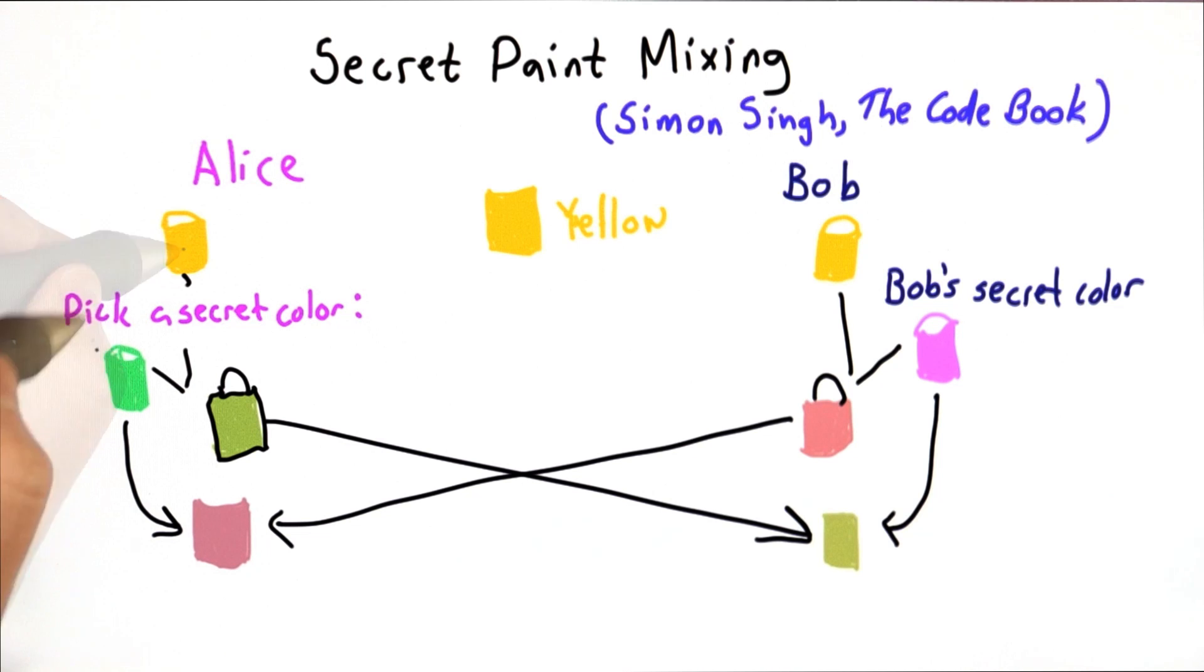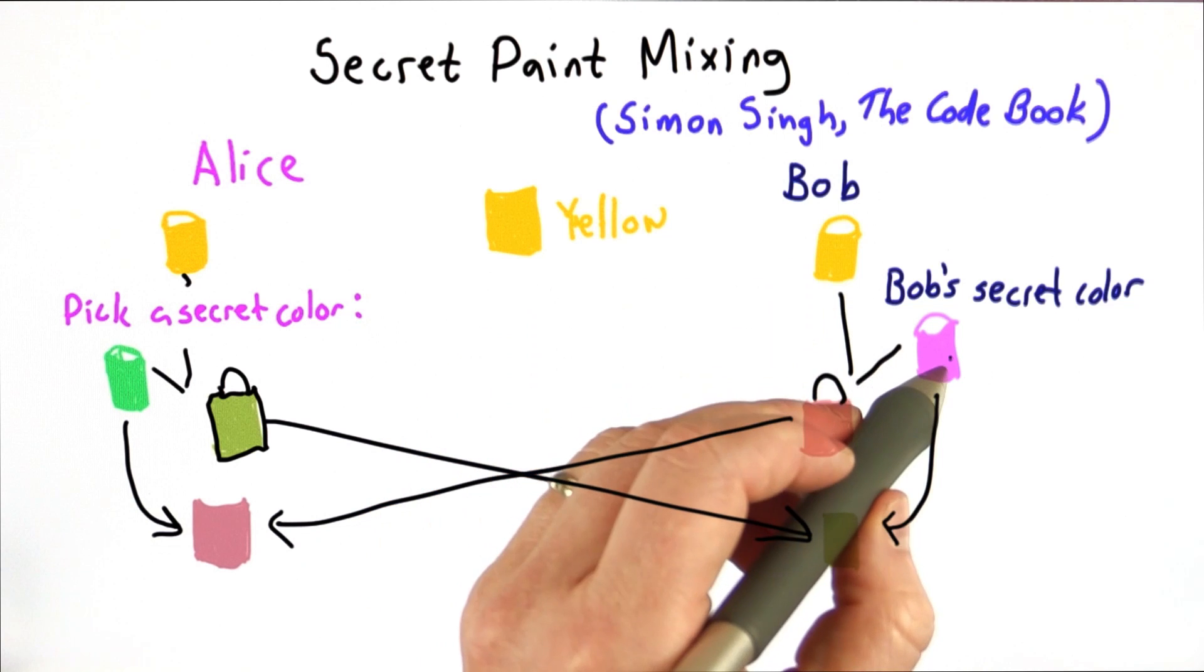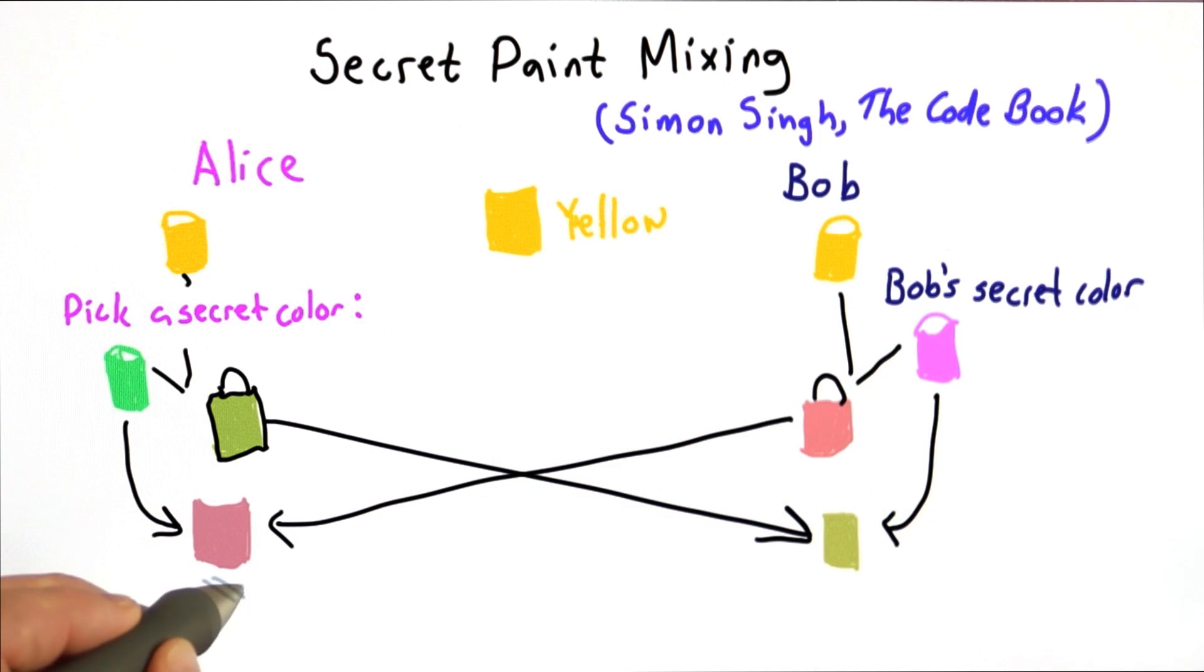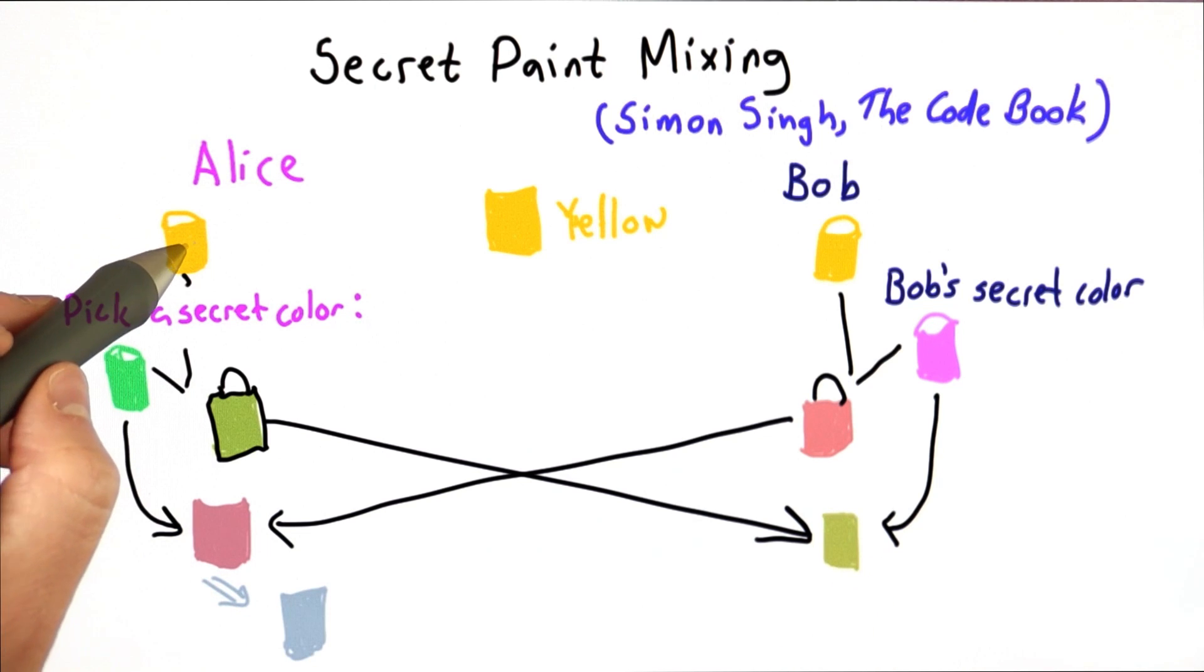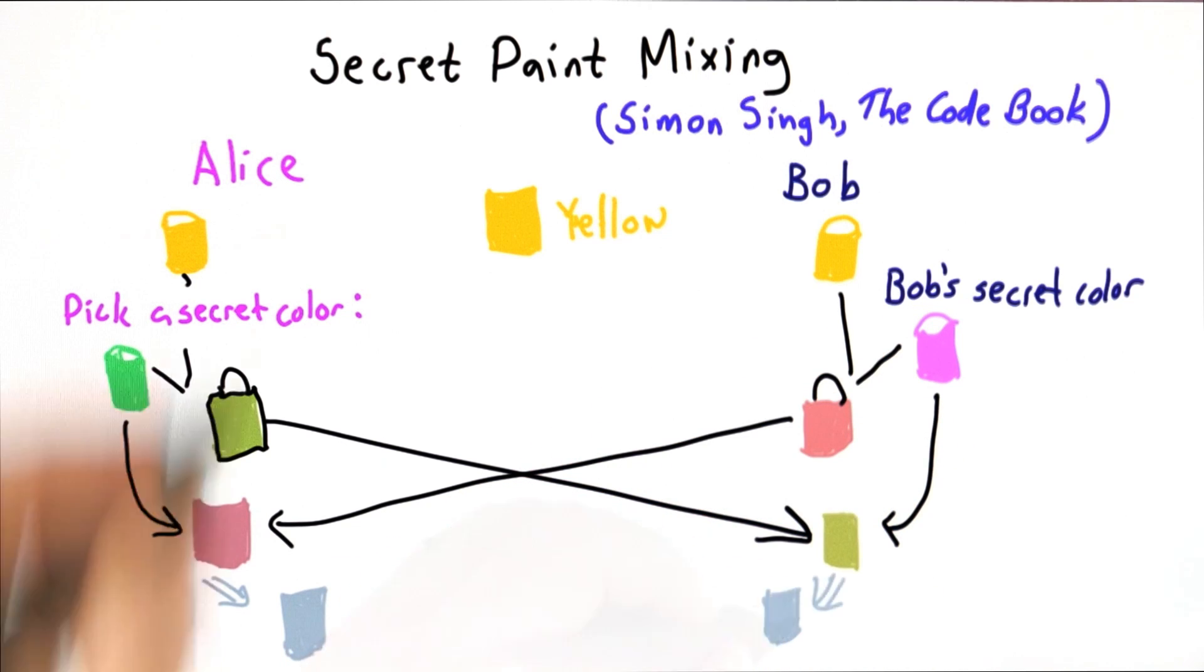So Alice mixed her green with the pink that came from yellow and Bob's secret color, and that'll give some new color, probably uglier than the gray that I'm drawing. But Bob will get the same thing, because Bob is mixing the yellow, Alice's secret color, and Bob's secret color and getting the same color out. So this gets them the same color. They've mixed the same three colors together.